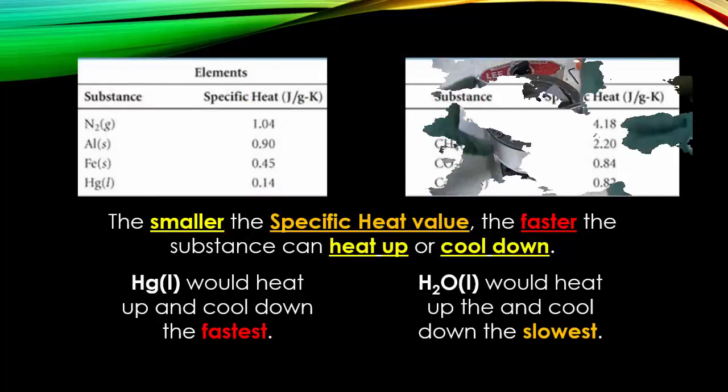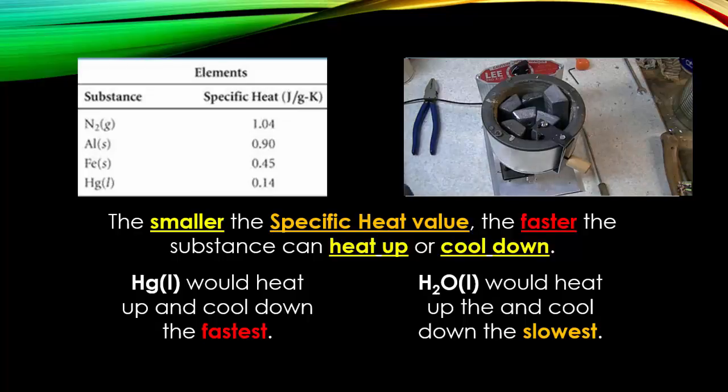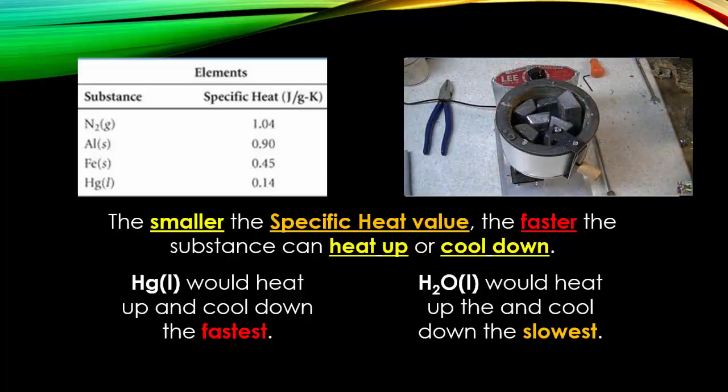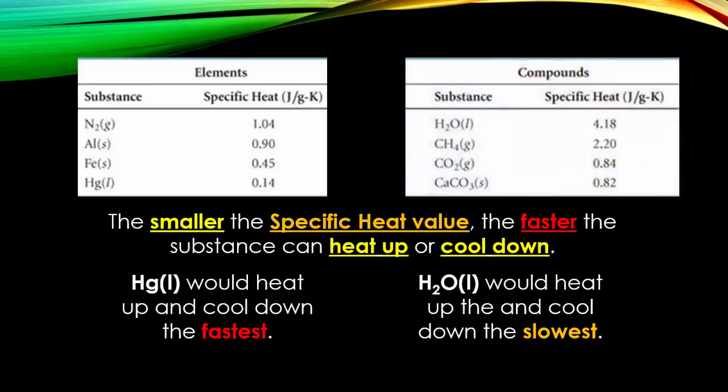The smaller the specific heat value, the faster the substance can heat up or cool down. When you look at the elements, elements like nitrogen have a big number. That big number means it takes more energy for it to heat up. Unlike mercury, which is a liquid metal, requires very little energy to heat up. Therefore, mercury would heat up in the fastest rate, but also cool down the fastest. And if you look in the compounds, you'll also notice that of all the different samples, water has the highest specific heat capacity.